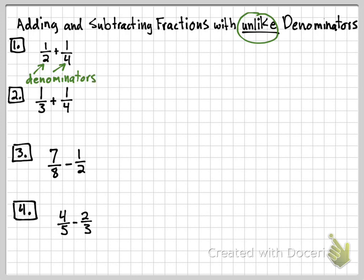In order for us to add these two fractions, one-half plus one-fourth, we have to get the denominators to be the same. Here we have a four and here we have a two. What I'm going to do to get them to be the same is make this two into a four by multiplying it by two.